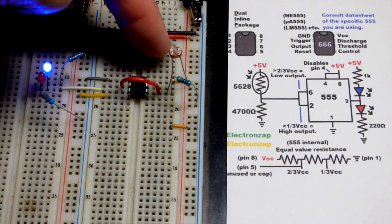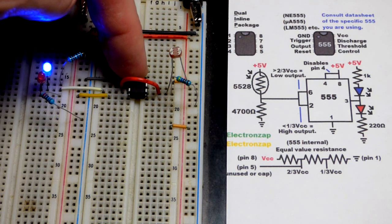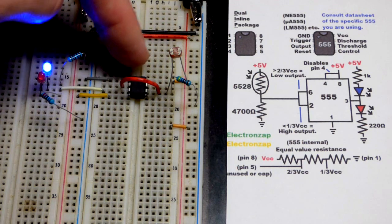So now in this video we're going to use the light dependent resistor to control a 555 timer wired as an inverting Schmitt trigger.